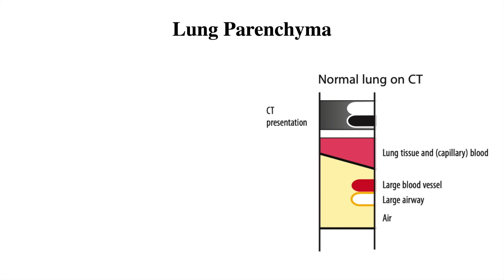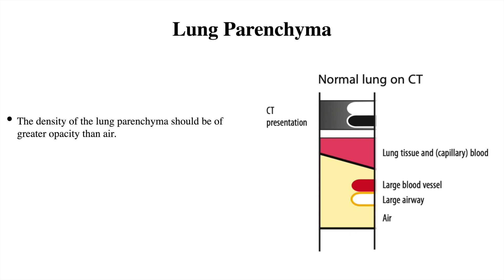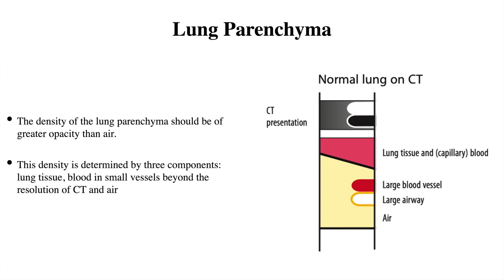Coming to how the lung parenchyma looks: the density of the lung parenchyma should be of greater opacity than air, so it does not appear totally black — it should be slightly less dark. This density is determined by three components: the lung tissue, the blood in the small vessels, and the air present. The combination of lung tissue, blood vessels, blood, and air determines how gray the CT scan will be. The more air present, the blacker the image; the more lung tissue or blood, the whiter that area of the CT scan will be.